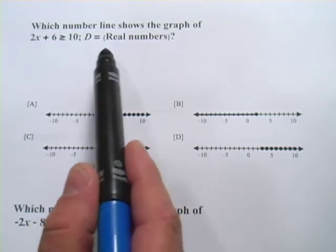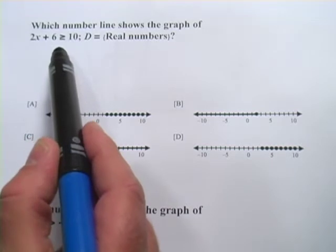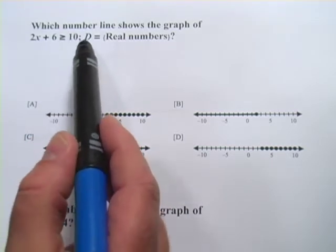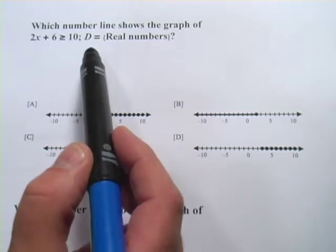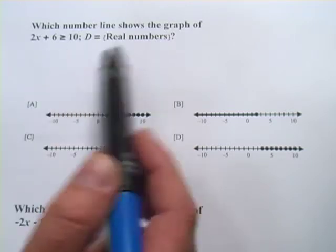This problem says which number line shows the graph of 2x plus 6 is greater than or equal to 10, and then it says big D equals real numbers. That big D stands for domain, and that means everything that x can be.